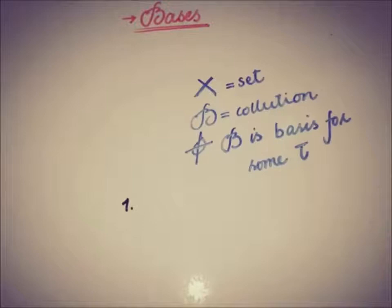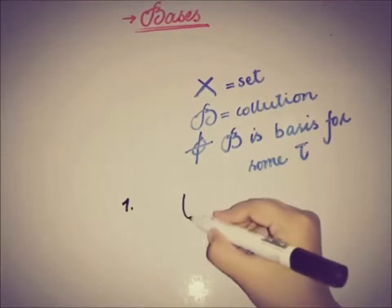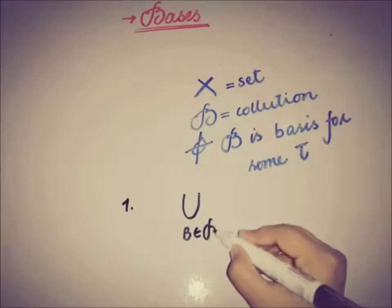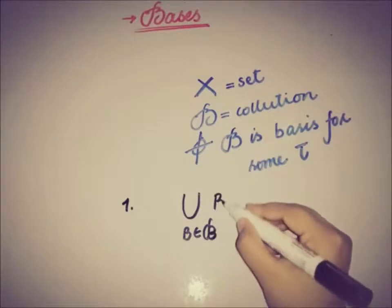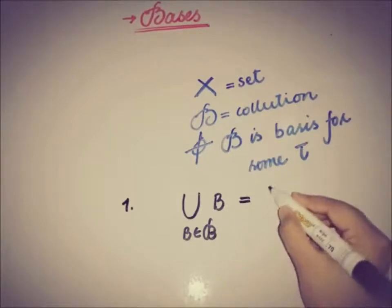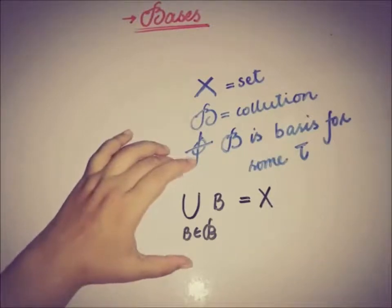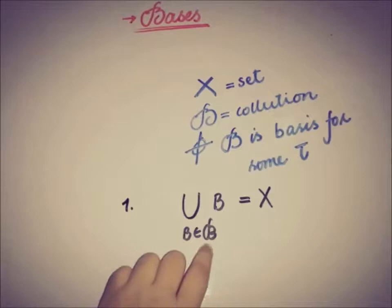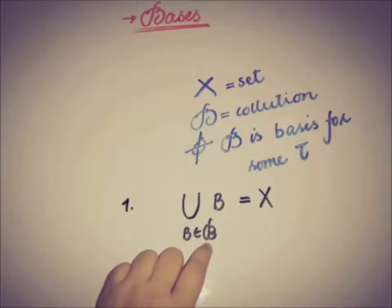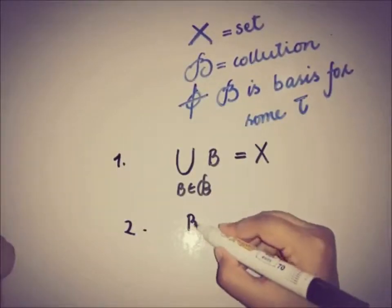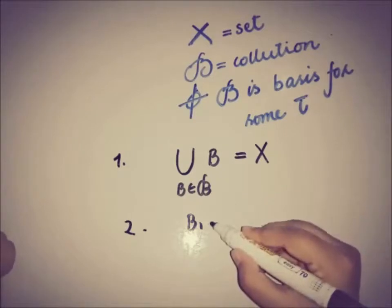The very first condition is that the union of all elements of the collection must be X. That is, if we take the union of all elements from that collection of subsets, the union must equal the set X.